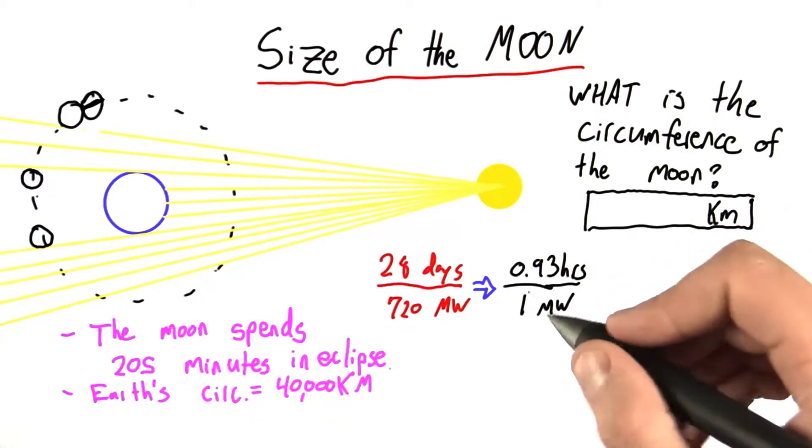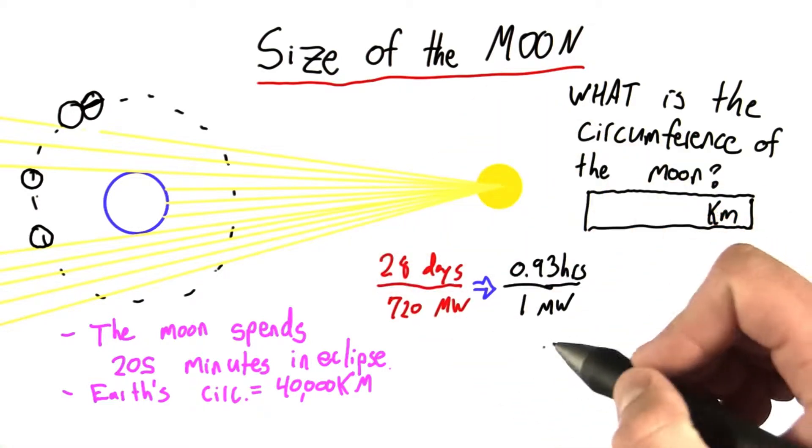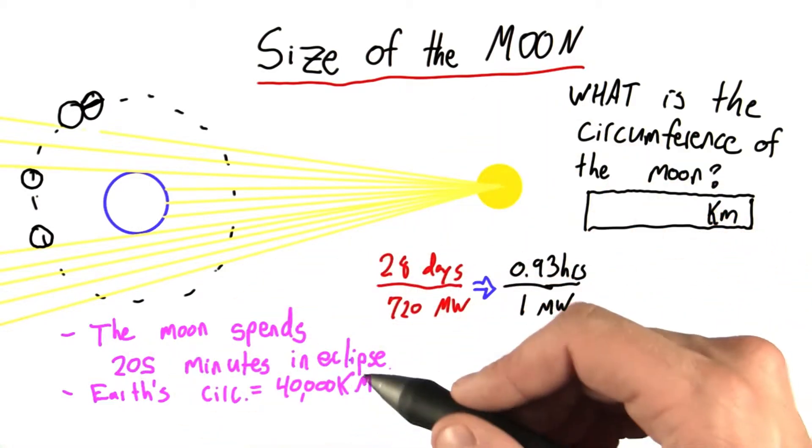So to solve this, the first thing I want to know is how many moons can fit into the Earth's shadow? How many moon widths are there associated with this time spent in eclipse?